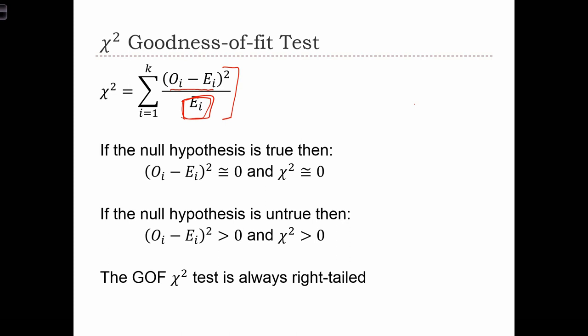Under the null hypothesis, we assume that the observed distribution, or the counts O_i, will equal the expected counts E_i.